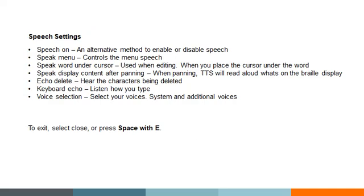The first item here says Speech On — this is where we can toggle our speech on or off. We already learned the global command, but you can also use a cursor router key here to toggle speech off. If I press Space or Next thumb key I have no speech. I'll turn it back on — Speech On — confirmed on my Braille display.